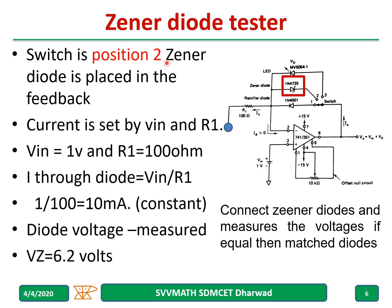When the switch is in position two, a Zener diode is in the feedback. The current is set by the same values: Vin equal to 1 volt, R1 equal to 100 ohms, and the current through the diode is 10 milliamps. The Zener diode voltage can be measured — for a 6.2 volt Zener, it will read 6.2 volts. Connect the Zener diodes and measure the voltage one after the other to find whether the Zener diode is working or not.